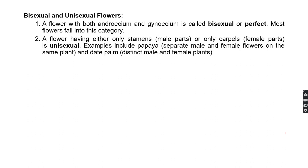Next is bisexual and unisexual flowers. A bisexual flower is one which has both androecium and gynoecium in a single flower. These flowers are called bisexual or perfect flowers. Most flowers fall in this category. Some flowers have both structures present in different flowers or on different plants.